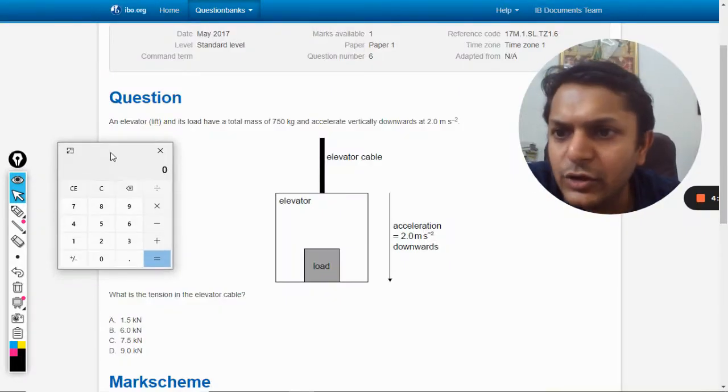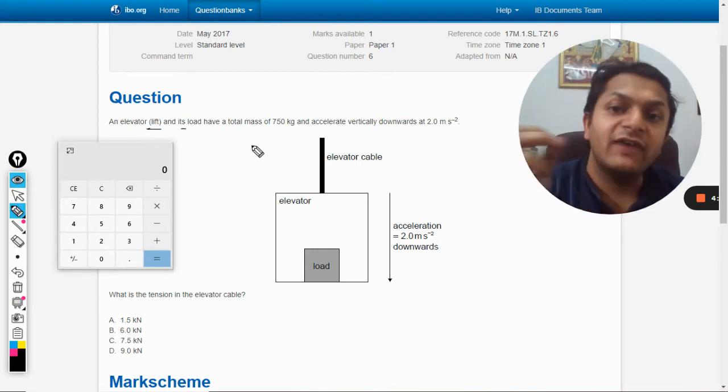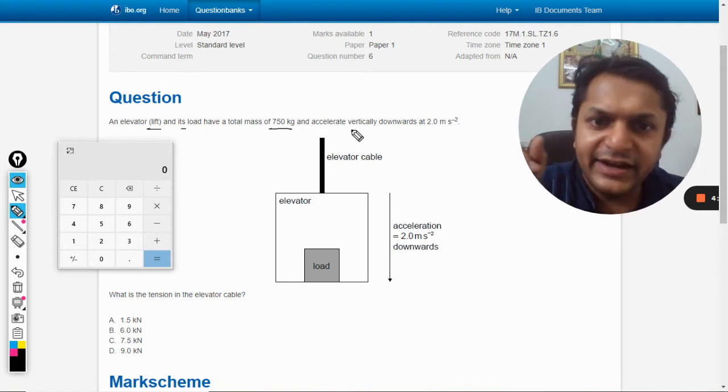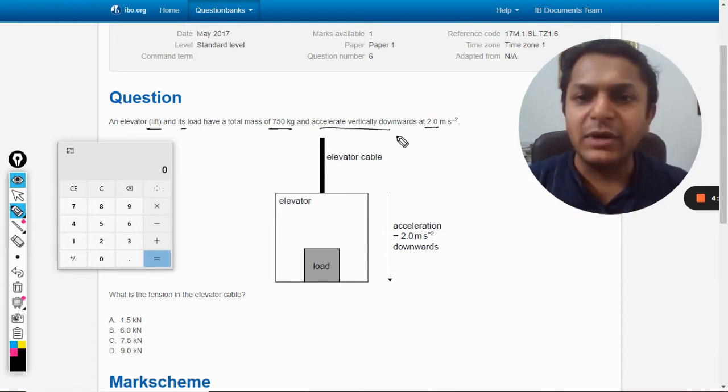Okay, dear students, in this question an elevator and its load have a total mass of 750 kg and accelerates vertically downwards at 2 meters per second squared. This is the final acceleration happening for the mass of 750 kg.